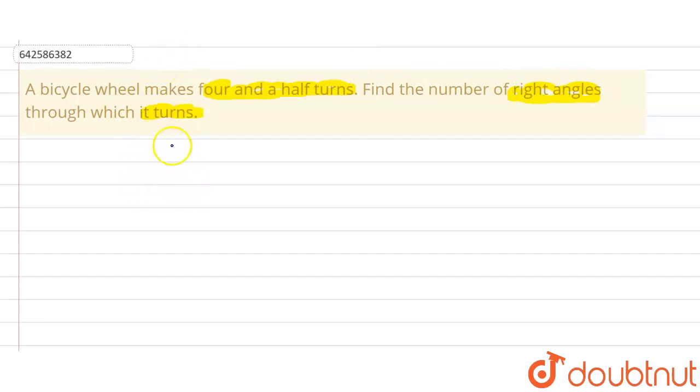Suppose this is the bicycle ring, now it is a complete circle. Now we can see that the complete angle is 360 degrees and if we divide it into 4 equal parts like this, if we divide it into 4 equal parts.